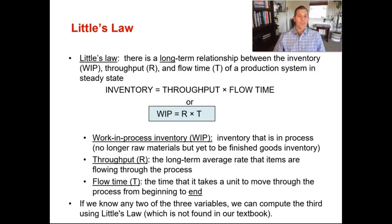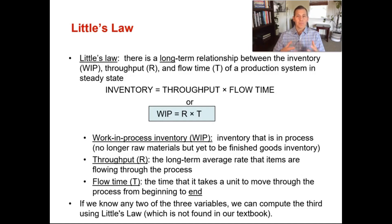When you have two of the three inputs, you can always solve for the third. The formula for Little's Law is: inventory equals throughput multiplied by flow time. Your inventory is your work in process — essentially anything that is not completed yet. For Little's Law, that can be raw materials in a manufacturing facility, or whatever is in process in some kind of service, such as people in a voting queue or home loan applications.